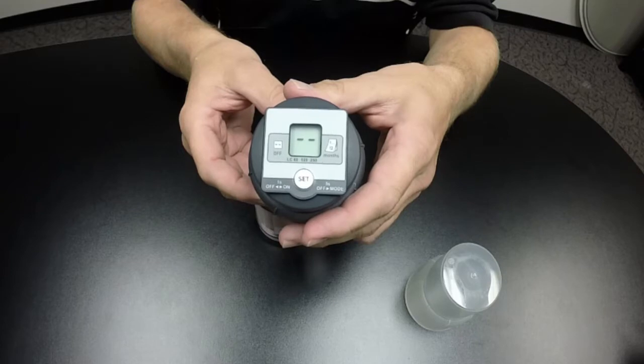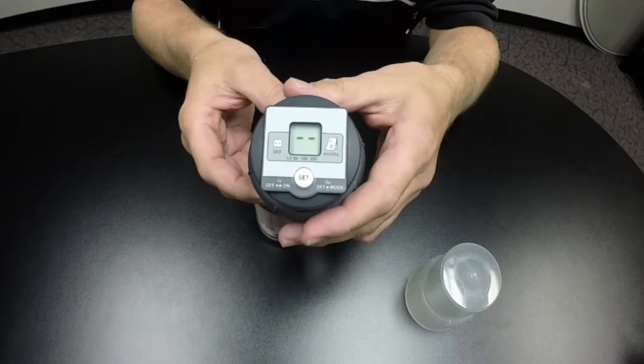When you see the double lines on the display screen, that means the lubricator is off.